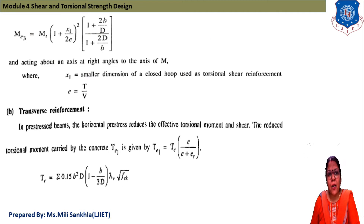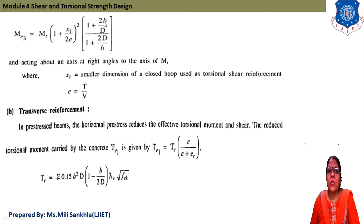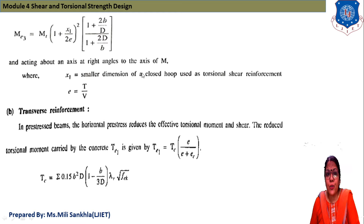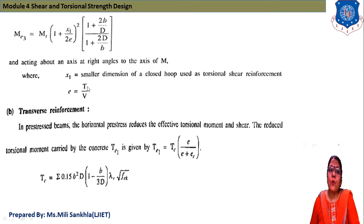Next we find moment ME3 = MT × (1 + X1) / (2E²) × (1 + 2B/D) × (1 + 2D/B), acting along the axis at right angle to the axis of M. Here X1 is the smaller dimension of the closed hook used as torsional shear reinforcement, and the eccentricity E = torsional moment / shear force.